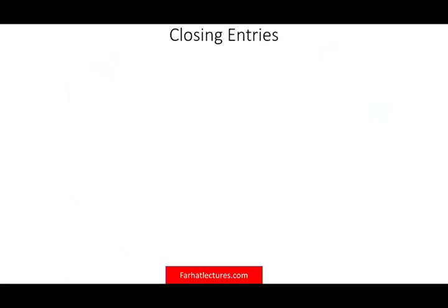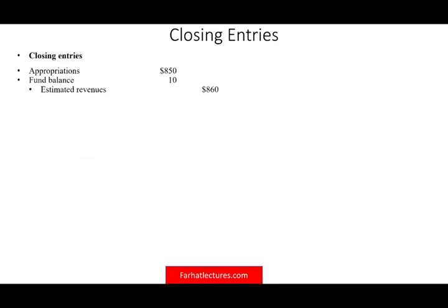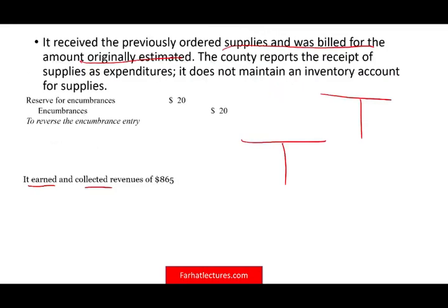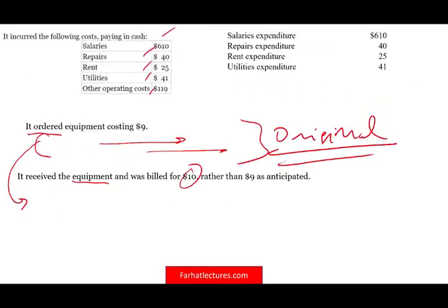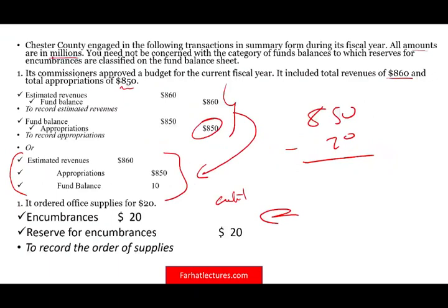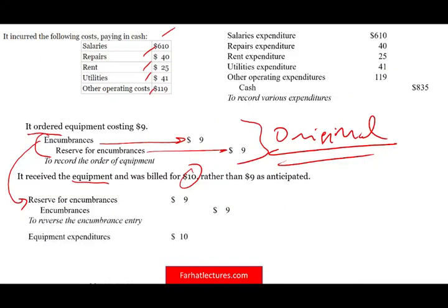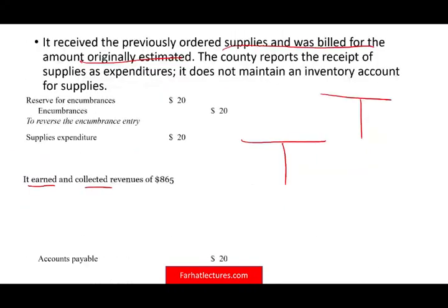Now let's do the closing entries. The first thing we do is close the original budgetary entry — the reverse of what we recorded initially. That means: debit appropriations $850M, debit budgetary fund balance $10M, credit estimated revenues $860M. Whatever you did originally, you reverse it exactly. On the CPA exam, you earn points for this because it's reversed for exactly the same original amounts.